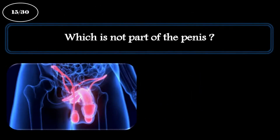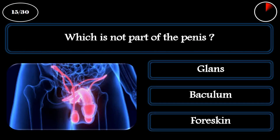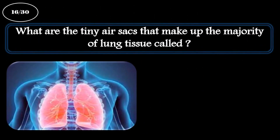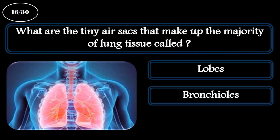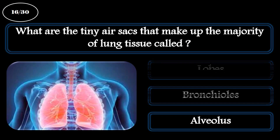Question 15. What are the tiny air sacs that make up the majority of lung tissue called? A: Lobes. B: Bronchioles. C: Alveolus. The correct answer is alveolus.